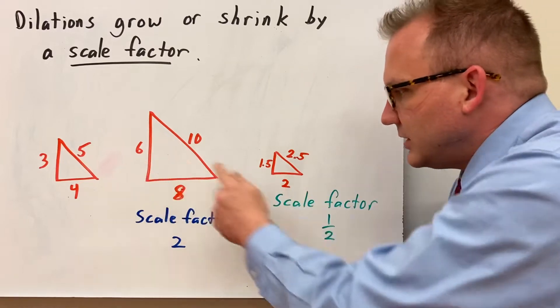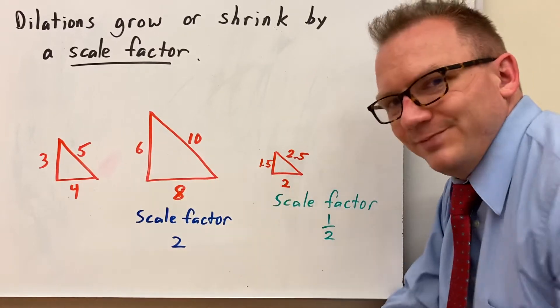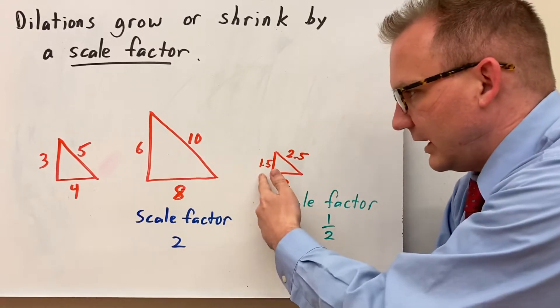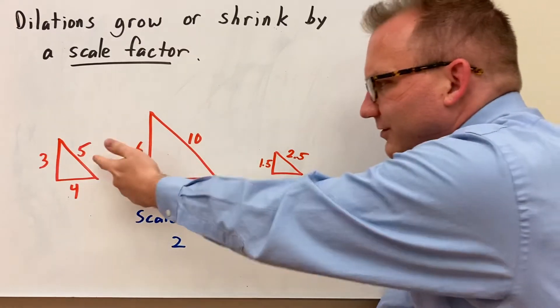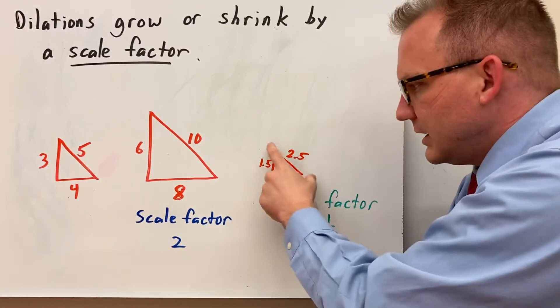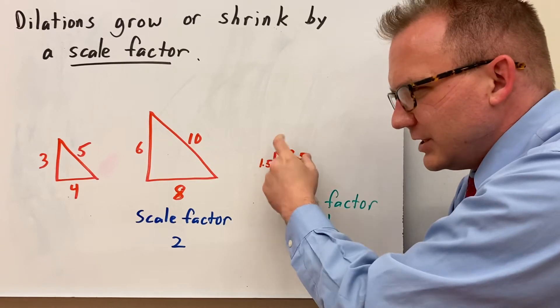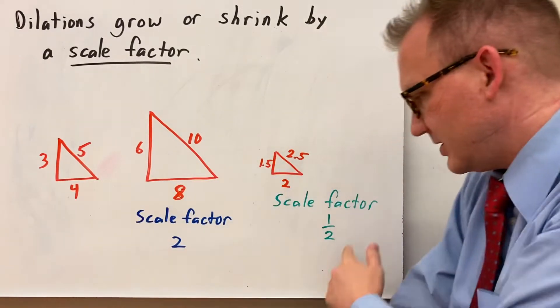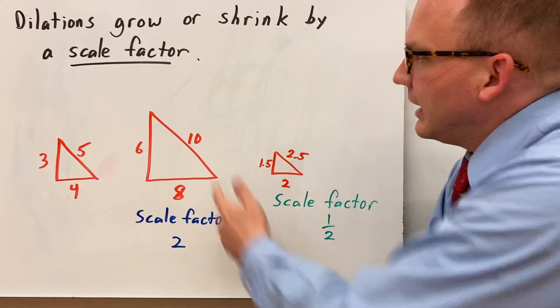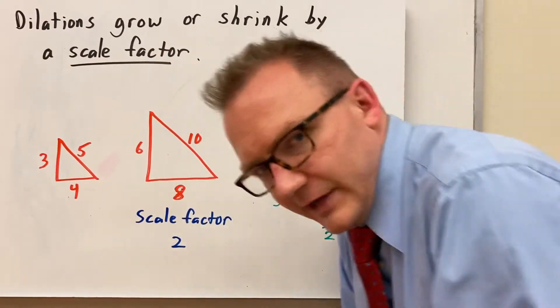Where you could say 3 times 1 half is 1.5 or 3 divided by 2 is 1.5, 4 divided by 2 is 2, and 5 divided by 2 is 2.5. So this triangle again would be shrunk, a shrunk version of that because my scale factor is 1 half and I would grow it if I had a scale factor of 2.